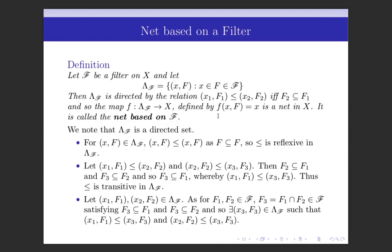Next we define a net based on a filter. Let F be a filter on X, and let Λ(F) be the set of ordered pairs (x, F) where x ∈ F and F is a member of filter F. This set Λ(F) is directed by the relation: (x₁, F₁) ≤ (x₂, F₂) if and only if F₂ ⊆ F₁.